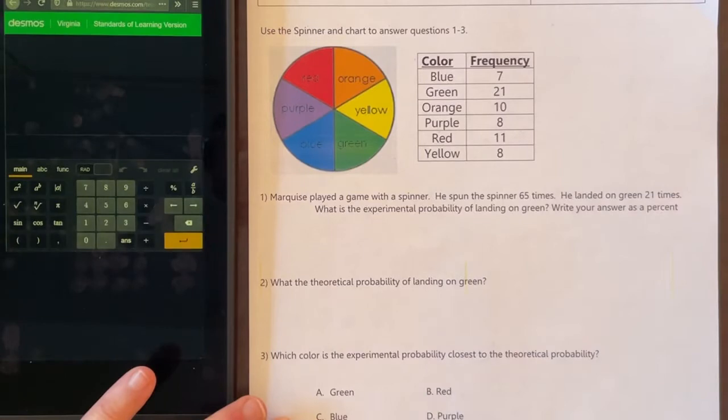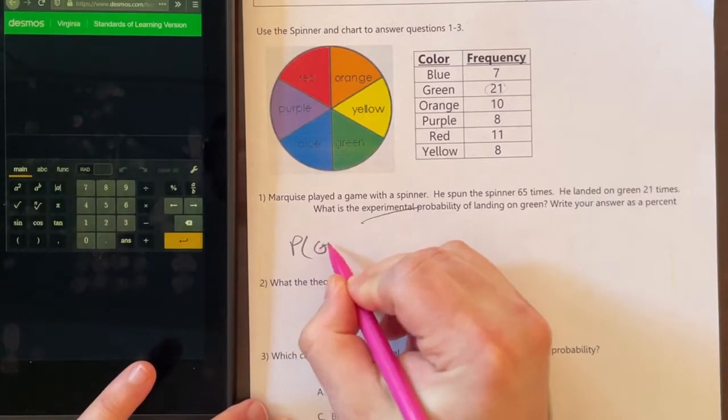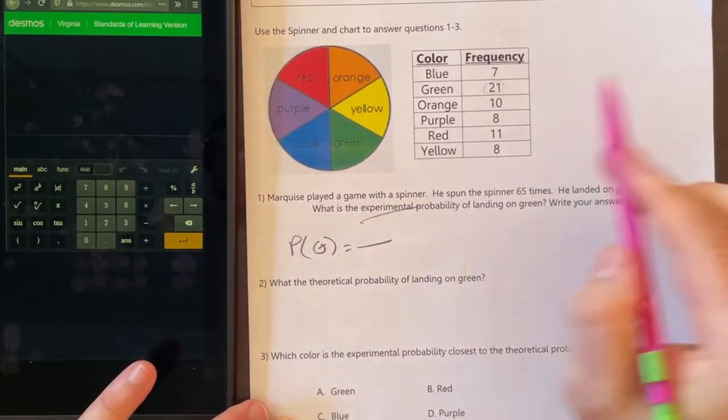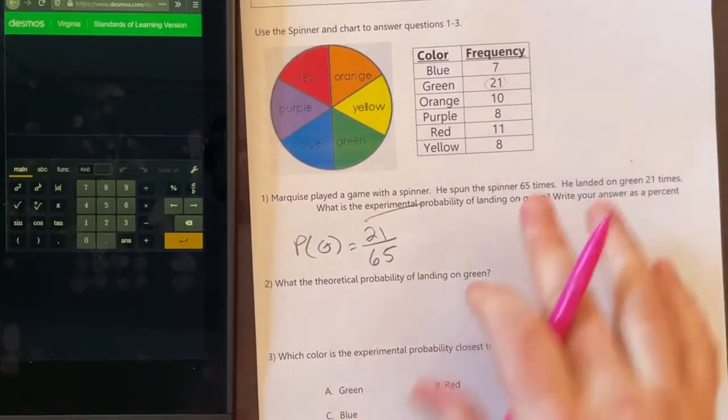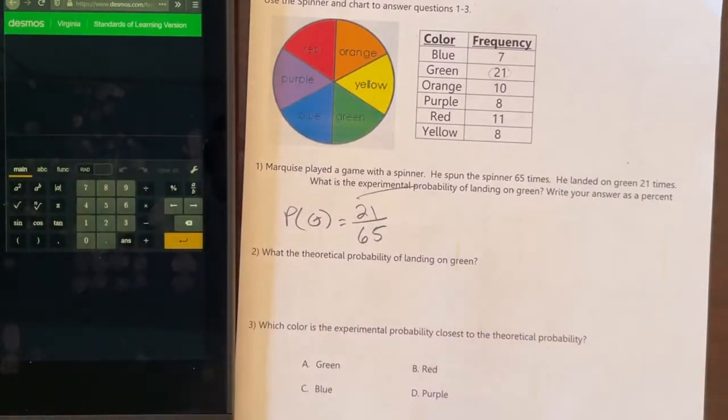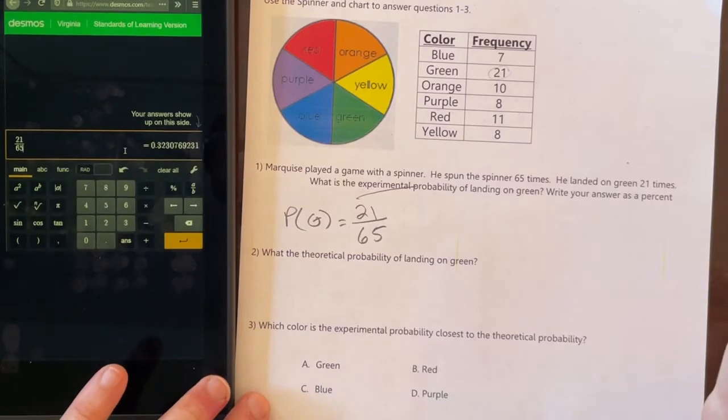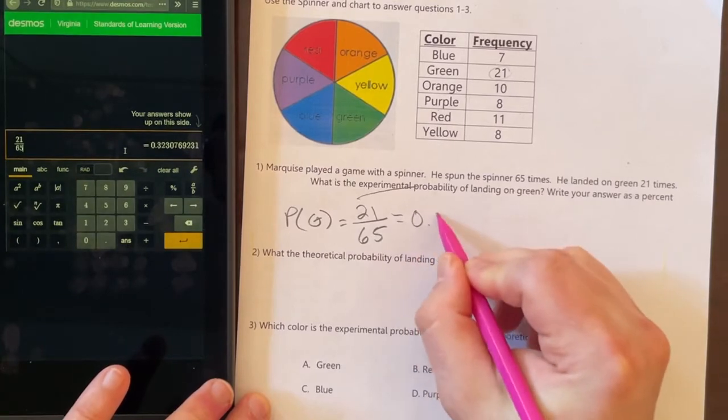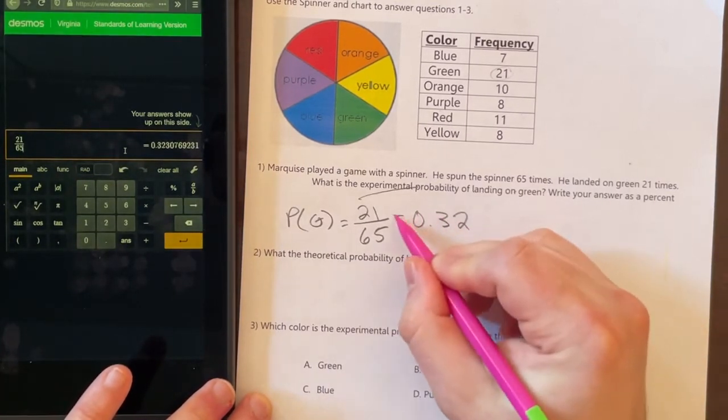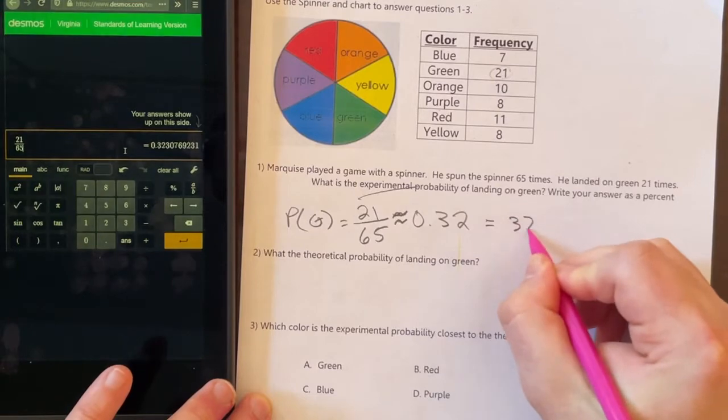This is going to be experimental probability since it already happened. Probability of green, how many times did it happen? Well, it happened 21 times out of the 65 given. We can use our wonderful Desmos calculator. I have 21 over 65. This is equal to, I have 0.32. I'll say it's about 0.32, which is equal to 32%.